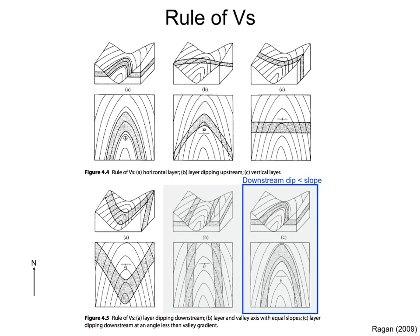Finally, if the layer dips less than the slope of the valley, the outcrop pattern will be a V, pointing opposite to the dip direction. This case is rather unusual.